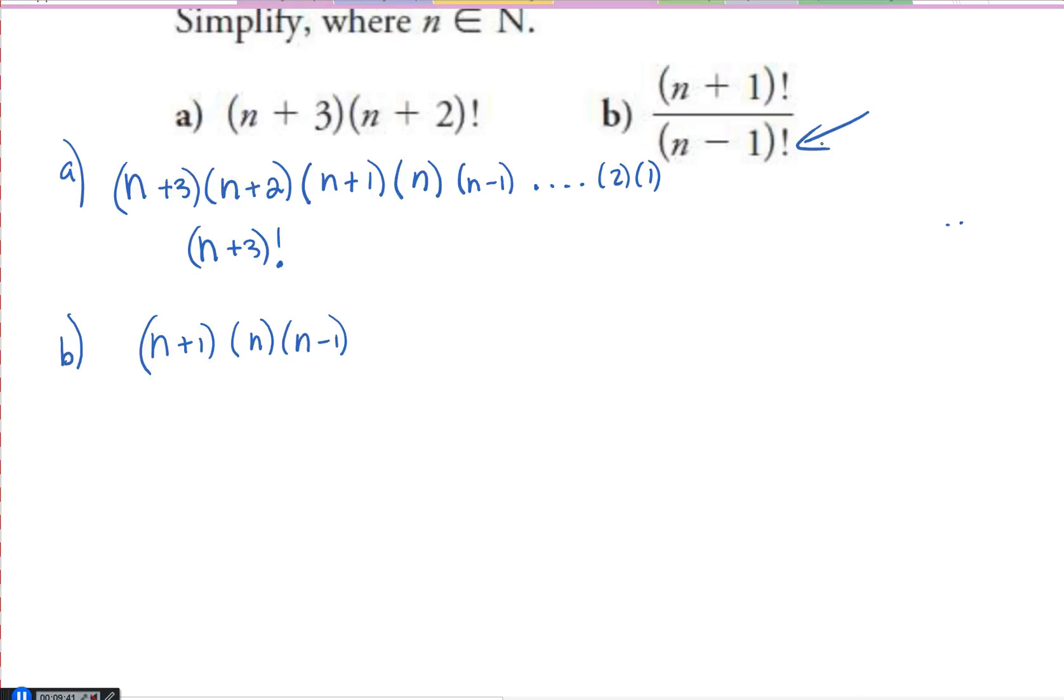And I see n minus 1. Wonderful. That means I can cancel it out. So n minus 1 factorial in the denominator, I can cancel those out, and I'm left with n plus 1 times n.